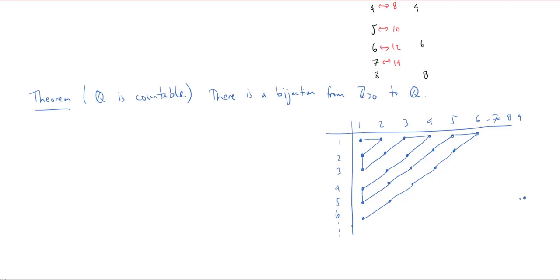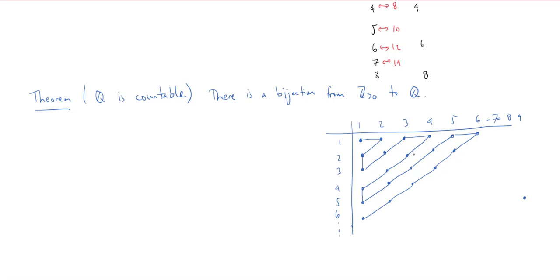There are some little flaws in this picture. For example, we don't have the negative numbers. Also, you're going to get a lot of repetition — for example, 2 over 2 is 1, but 3 over 3 is also 1, so in terms of injectivity we have all sorts of issues. However, this should suggest that it's possible — we just need to be careful when we do the proof. This should at least make you believe there is some path that goes through all the rational numbers.